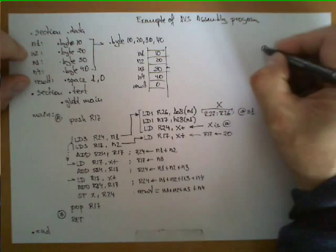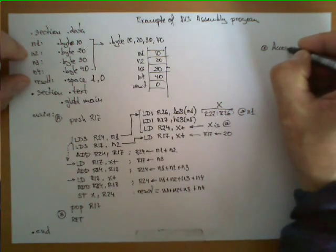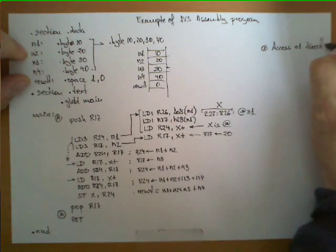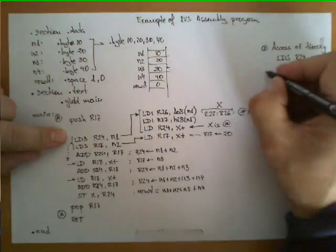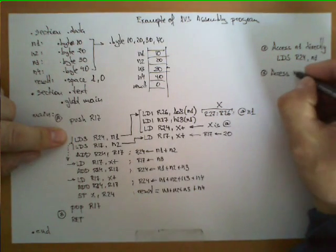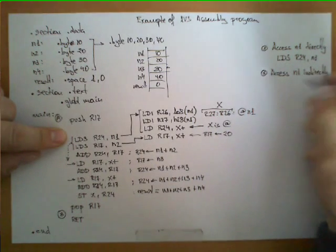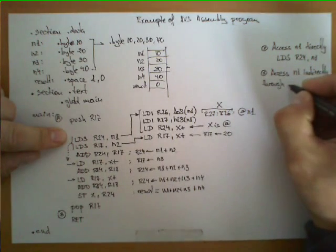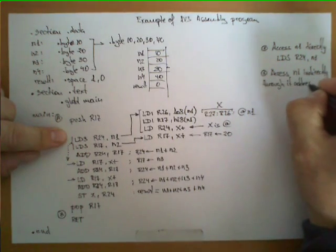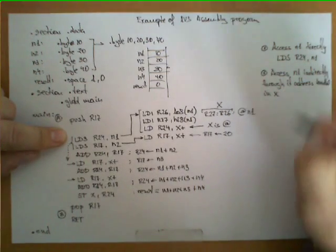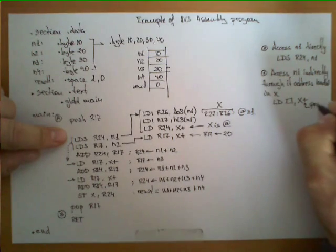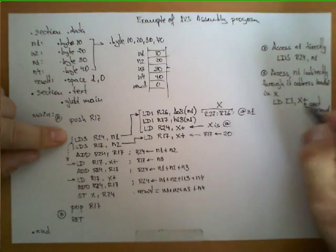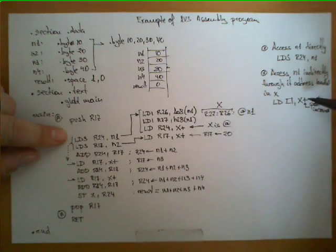Now, let's summarize six points that are very important in this program. First, I can access N1 directly with instruction LDS. Remember LDS, R24, N1. But, I can also access N1 indirectly through its address loaded in X. And that was instruction LD. Then you give a register and X. And I can add this which is called a post increment. Which, by the way, is optional, you can use it or not, but if you plan to access the following data in memory, it's very convenient because it leaves the register already modified and pointing to the next data.